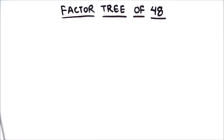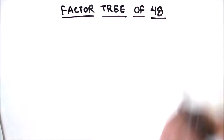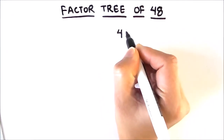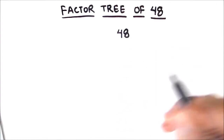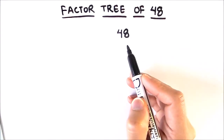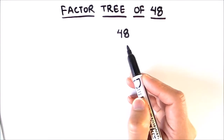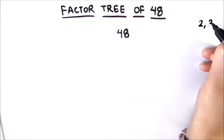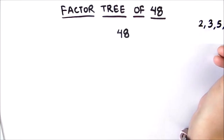Hello students. In this video we are going to learn how to draw a factor tree of the number 48. For making a factor tree, we make use of the prime factorization method, in which we find the factors of this number and write it in terms of its factors. We need to break down 48 into two factors such that one of the factors is a prime number. The first few prime numbers are 2, 3, 5, 7, 11, and so on.